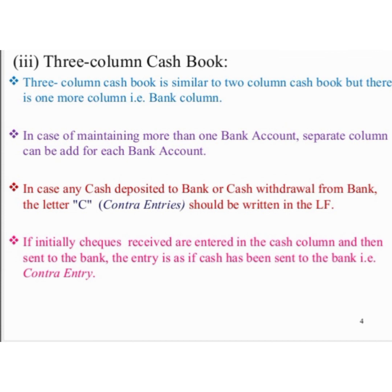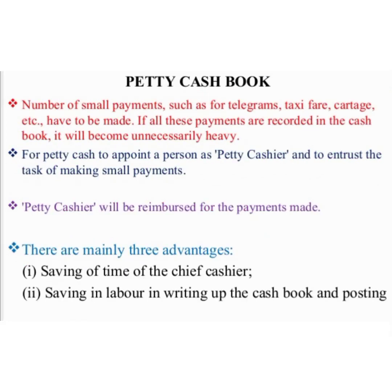The third type is the triple column cash book, which is similar to the two column cash book but has one more column — the bank column. In case of maintaining more than one bank account, a separate column can be added for each. When cash is deposited to the bank or withdrawn from the bank, the letter 'C' — that is, contrary entry — should be written in the ledger folio column. If checks received are first entered in the cash column and then sent to the bank, the entry is treated as if cash has been sent to the bank, that is, a contrary entry.